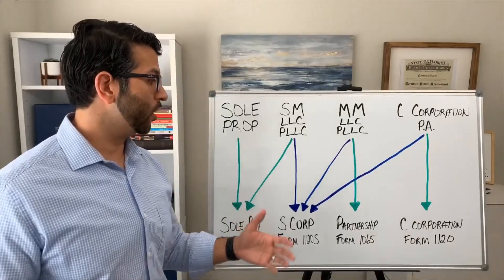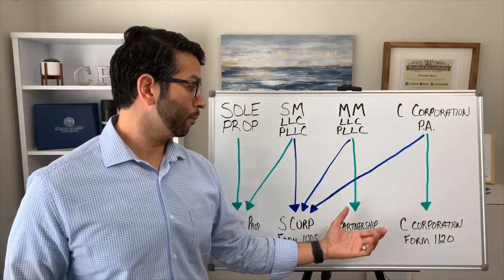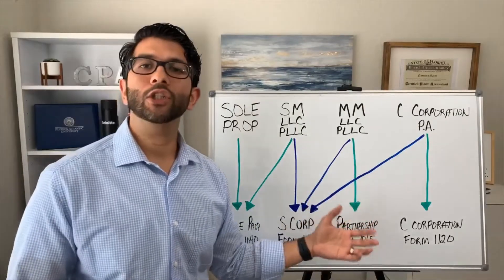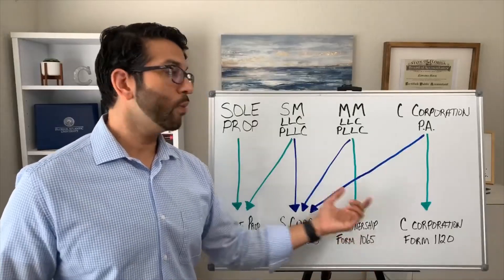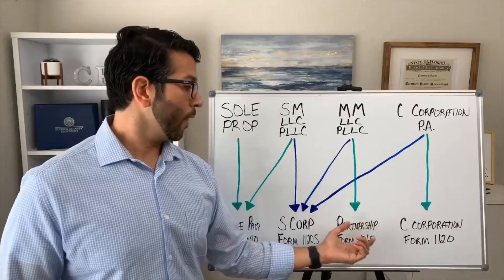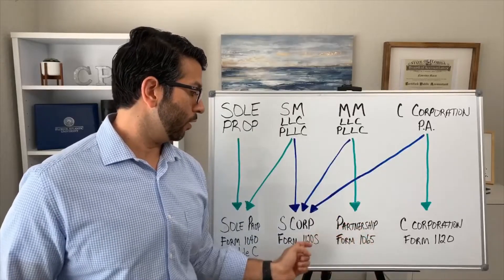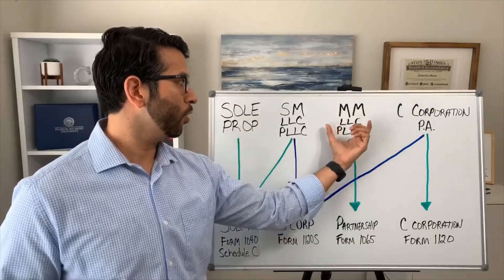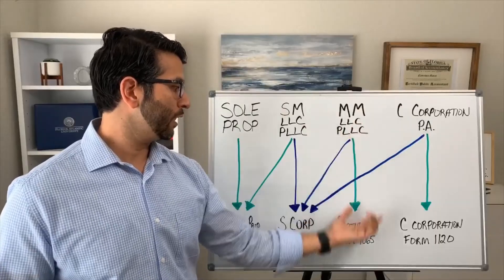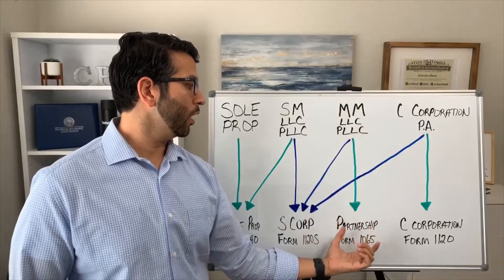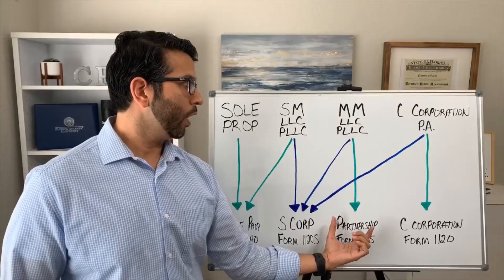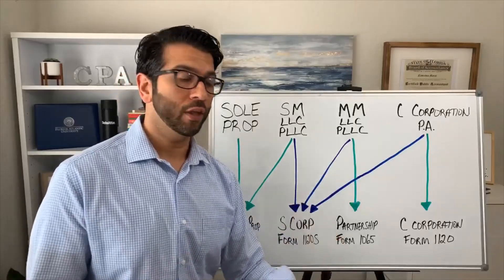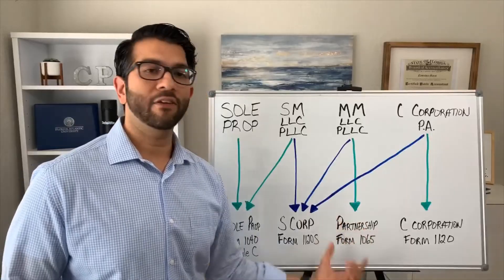The penalty for not filing on time is pretty hefty. The IRS will charge approximately $200 per month per owner for late filing of these returns. For example, a multi-member LLC taxed as a partnership with two members would incur $400 per month for being late in filing that return.